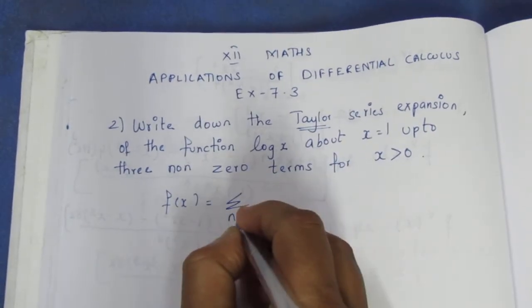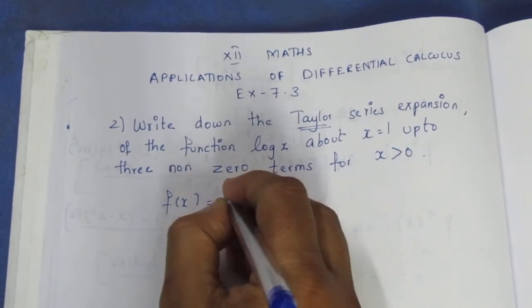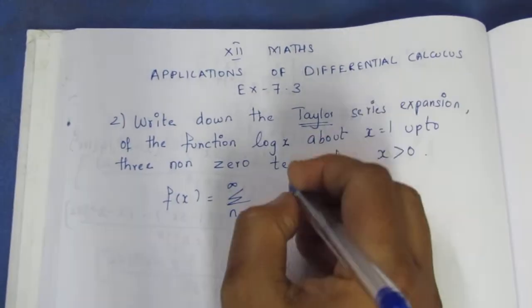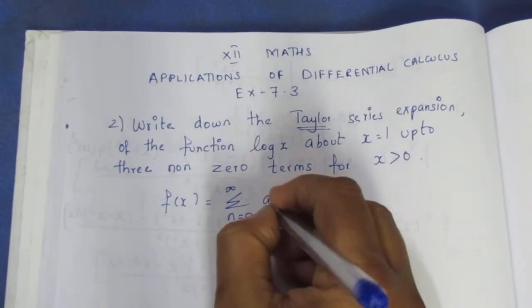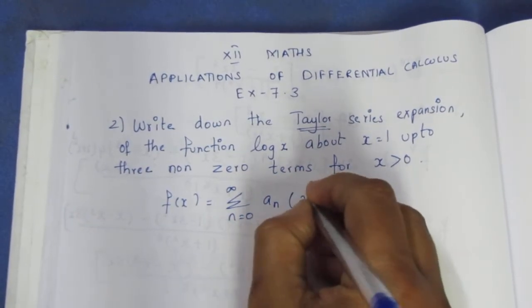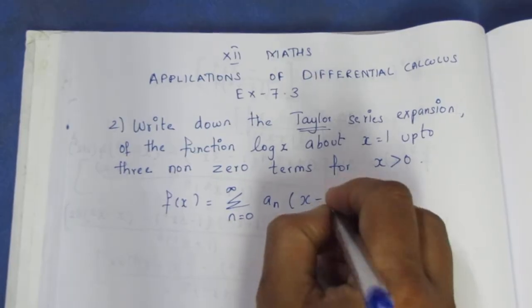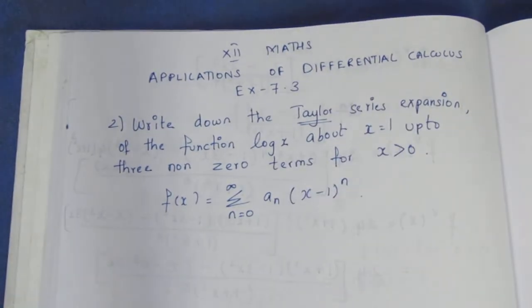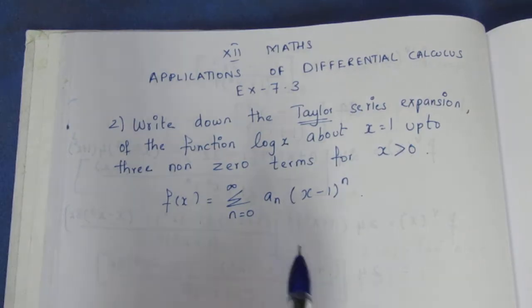The Taylor series formula is: f of x equals the summation from n equals 0 to infinity of a_n times (x minus 1) to the whole power n. This is the formula.